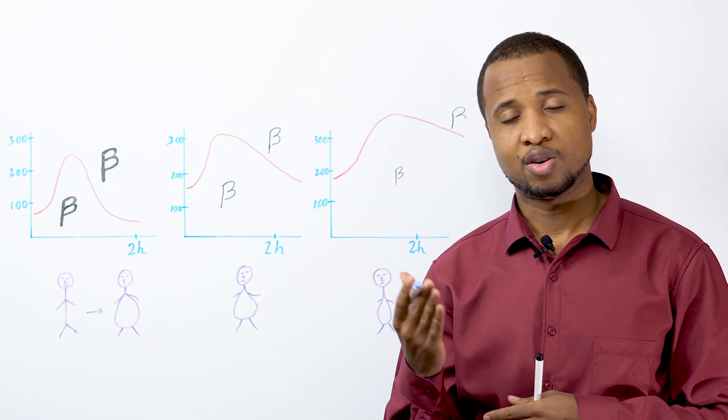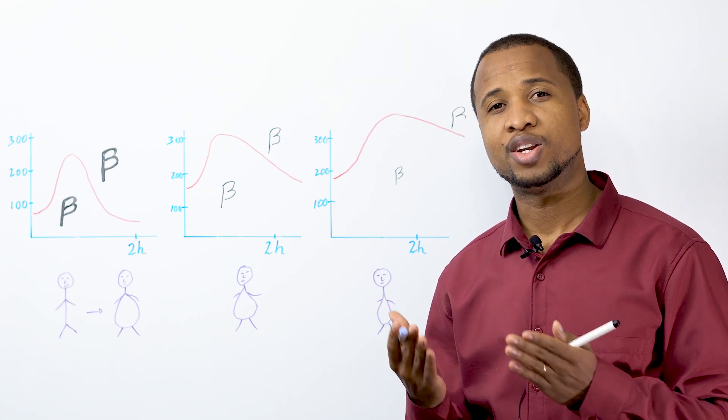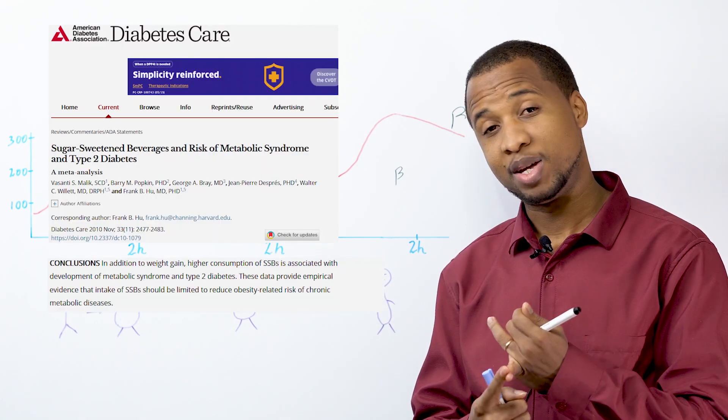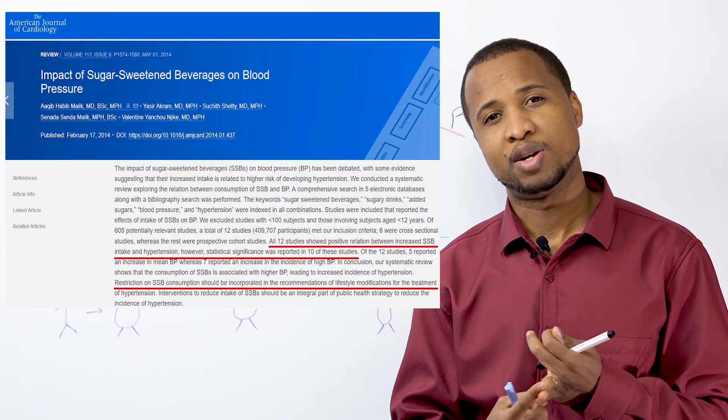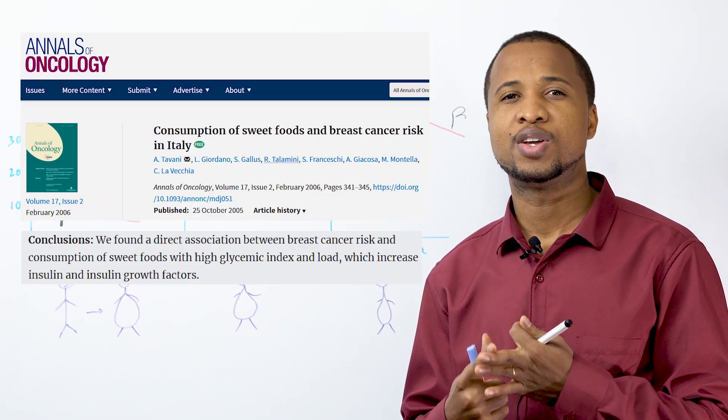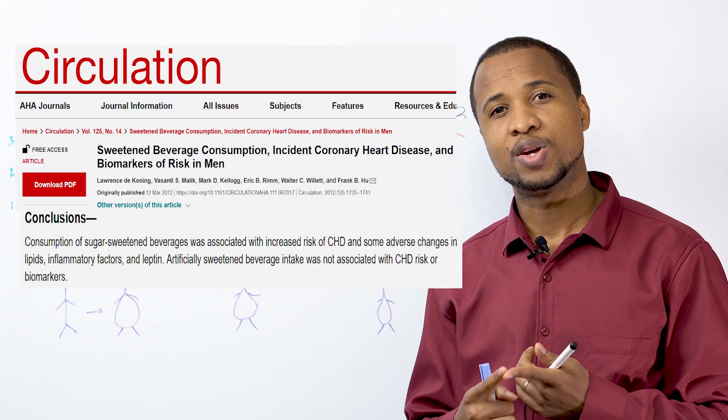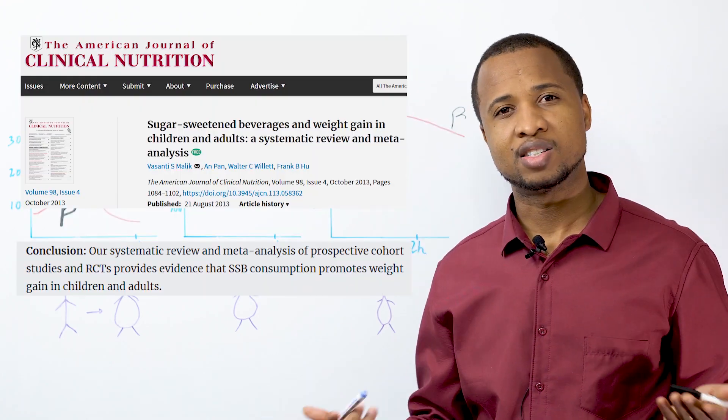Now there are thousands of studies on sugar and sugar can increase your risk of diabetes, type 2 diabetes, can increase your risk of high blood pressure, can increase your risk of cancer, can increase your risk of heart disease and a lot of other stuff.